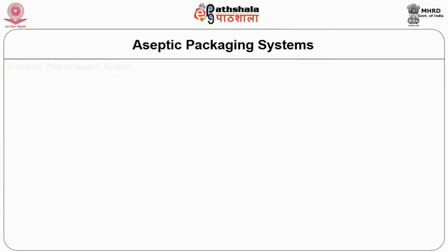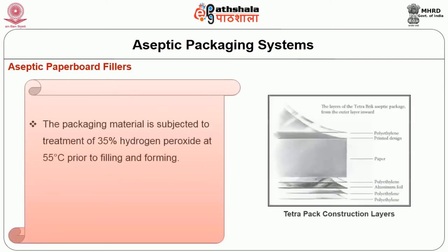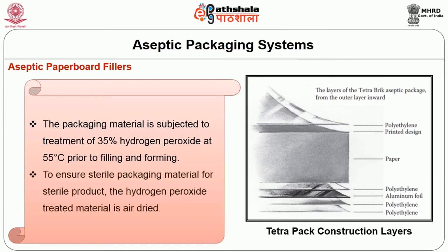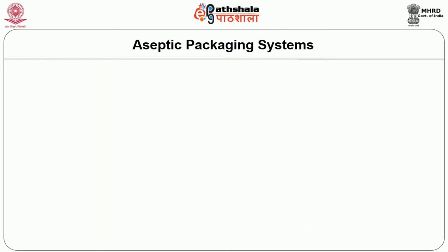The next type of aseptic packaging system is aseptic paperboard fillers. In this packaging system, the packaging material is subjected to treatment with 35% hydrogen peroxide at 55 degrees Celsius prior to filling and forming. To ensure sterile packaging material for the sterile product, the hydrogen peroxide treated material is air dried.